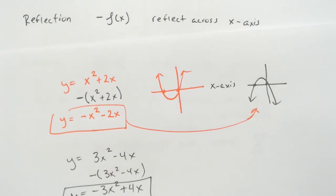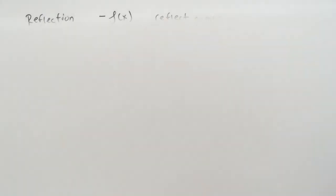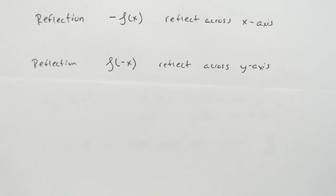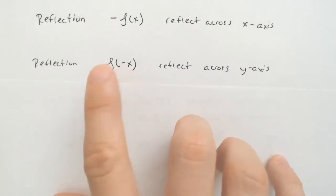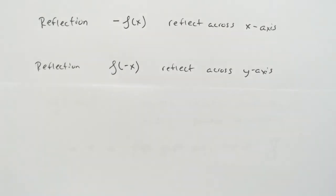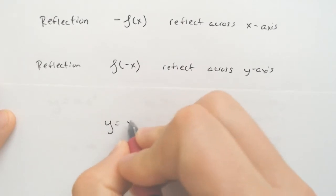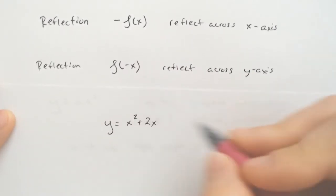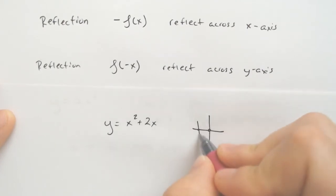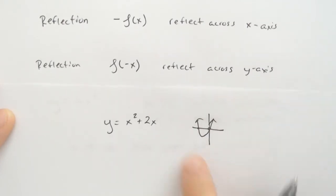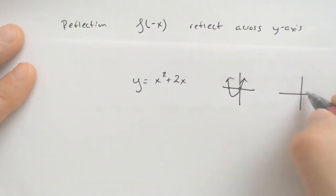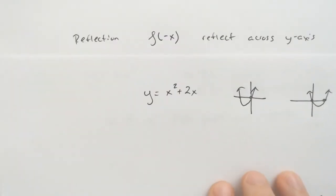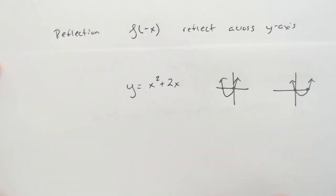Next one on the list is reflect across the y-axis. Reflecting across the y-axis means that we have a negative x here, which is f of negative x. And if you have to do that, then if we have the function y equals x squared plus 2x, instead of it reflecting and flipping over the x-axis, we want to reflect over the y-axis. And if we're doing that, the new graph would be over here, but still need to face up. Well, that's different.